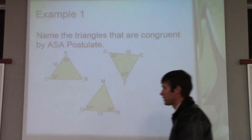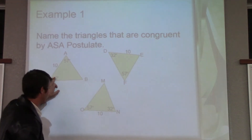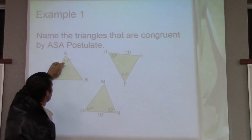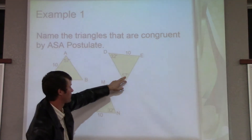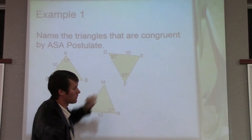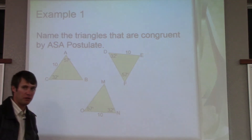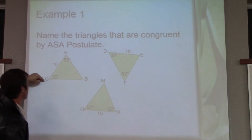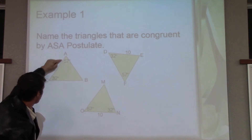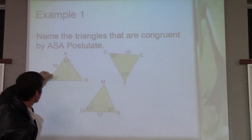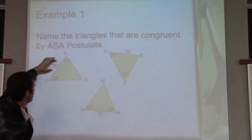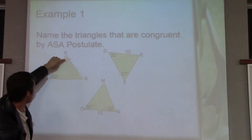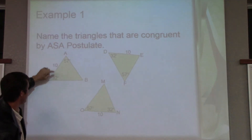In order for us to do it, we need congruent angles. So we have 32 and 32, we have 57 and 57, so we have two angles that are congruent. Now we need the side between those two angles to be congruent. This side 10 is equal to this side 10, so it's angle-side-angle.